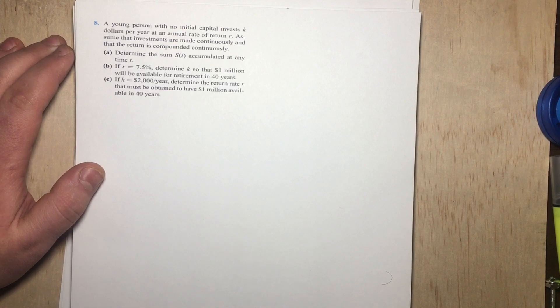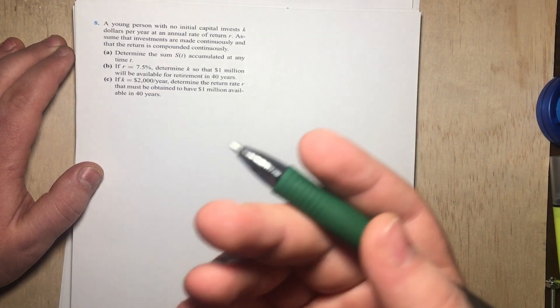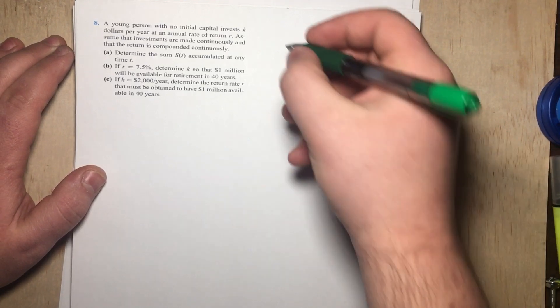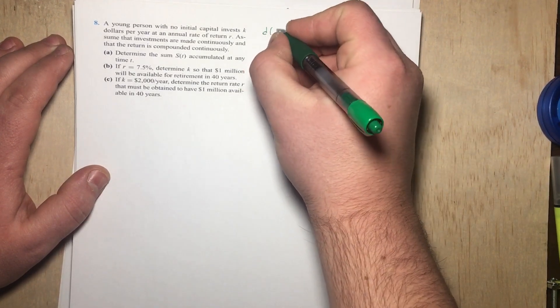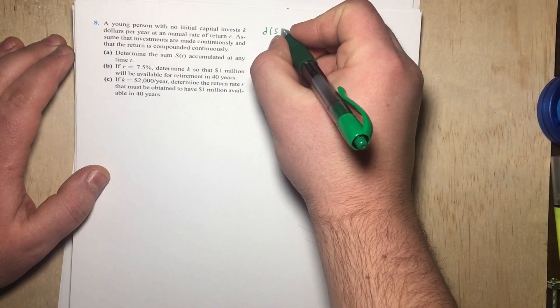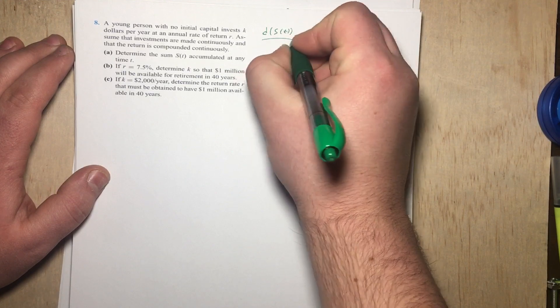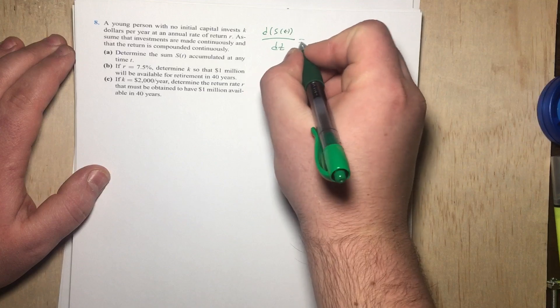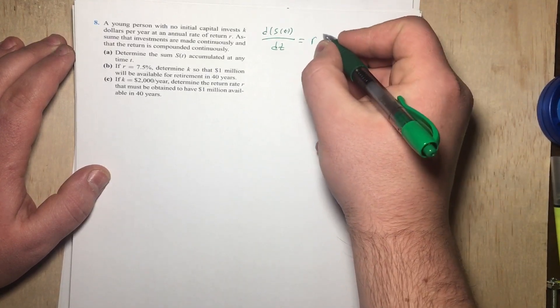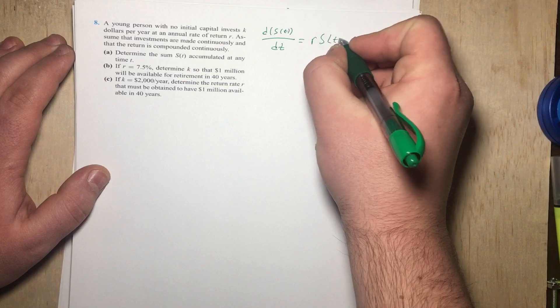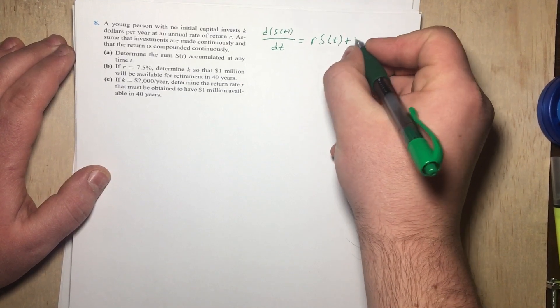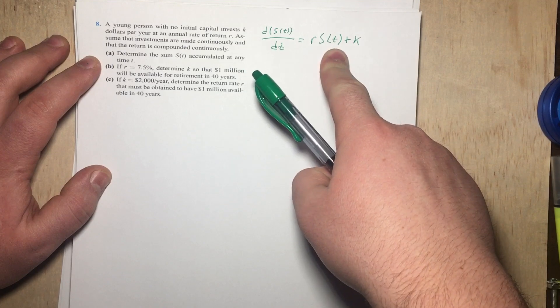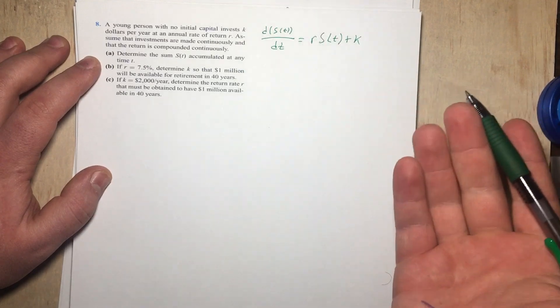Alright, so I want you to remember that always the overall rate is going to be nothing but rate in minus rate out. So in other words, we can write dS(t)/dt equals R times S(t) plus K. Notice that in this case we have only addition and that is because there's no rate out.